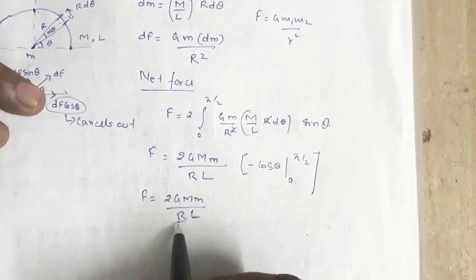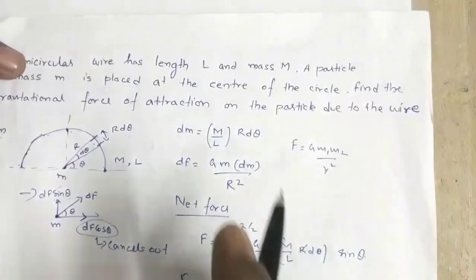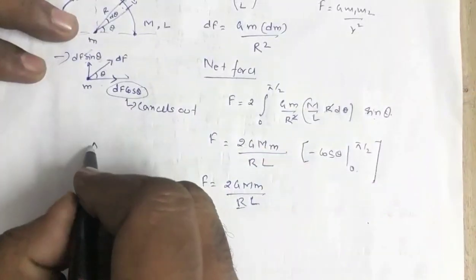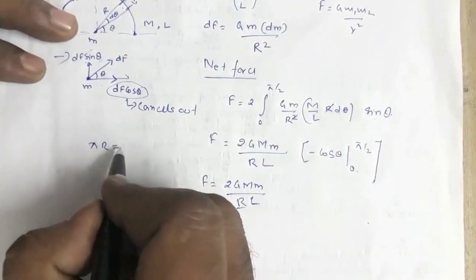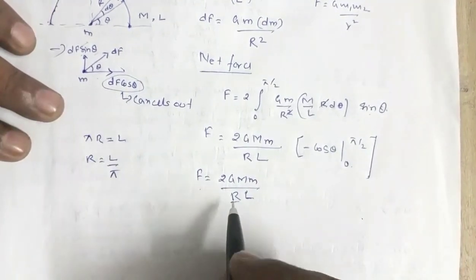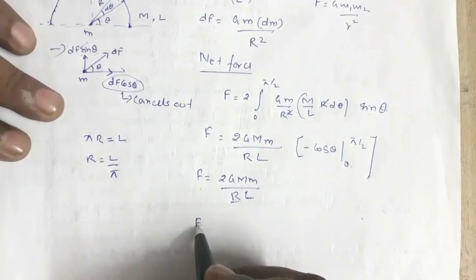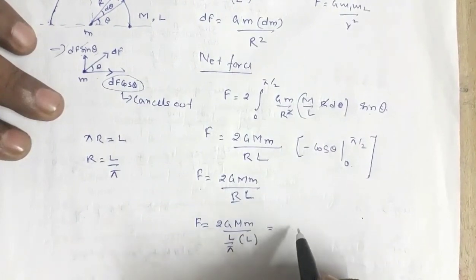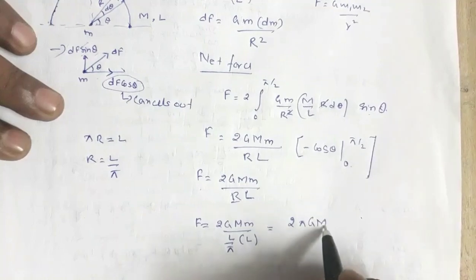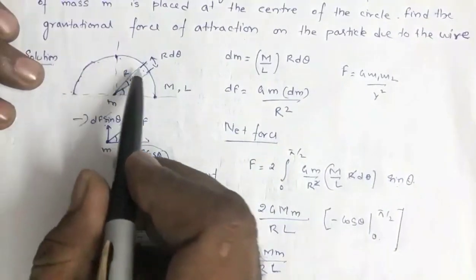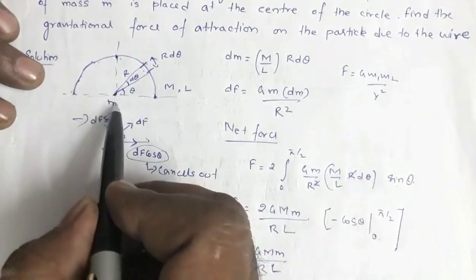We don't know the radius, but the question gives the length of the wire as L. For a semicircle, πR = L, so R = L/π. Substituting this into our expression: F = 2GMm·(π/L) / L = 2πGMm / L².